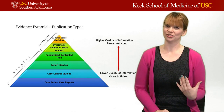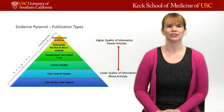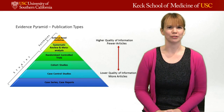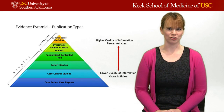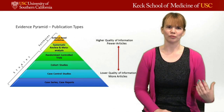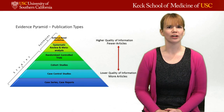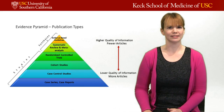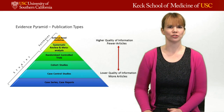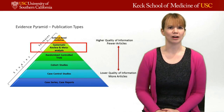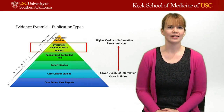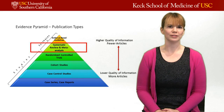This should look familiar to you: the evidence pyramid of the publication types. Starting from the bottom, that's where the primary studies are, and at the top is a synthesis of the research. That's what we'll be talking about today — systematic reviews and meta-analyses.